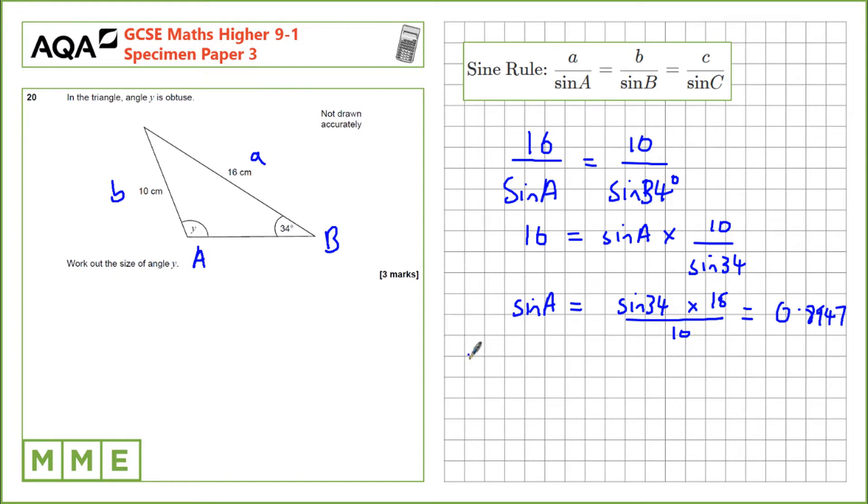If you want to calculate A, we'll just do the inverse sine of that. So sine minus 1 of 0.8947, which is 63.47 degrees.